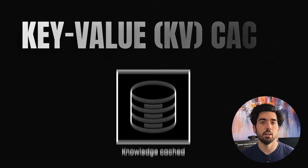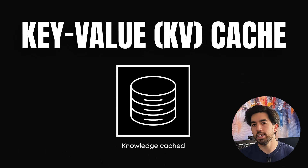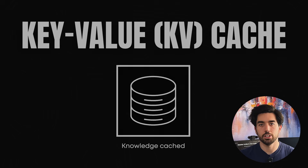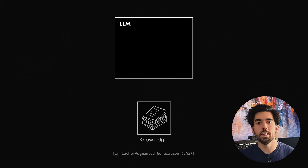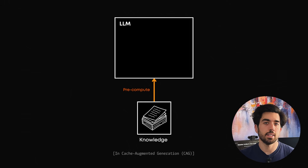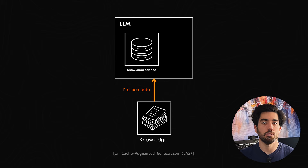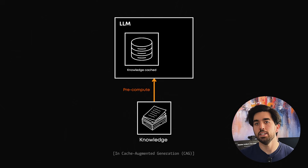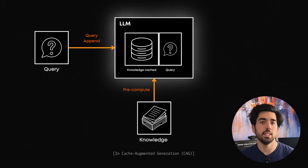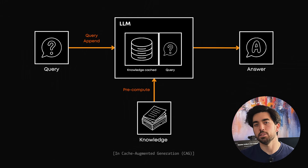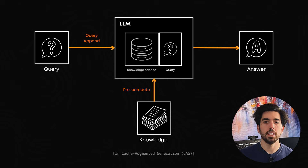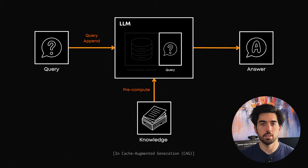CAG uses something called a key-value, or KV, cache. In regular LLMs, when they process text, they create these KV pairs. Think of keys as a label, and values as the actual information. The language model works with keys and values to understand the content and generate its response. Usually, these are temporary and disappear after each response.